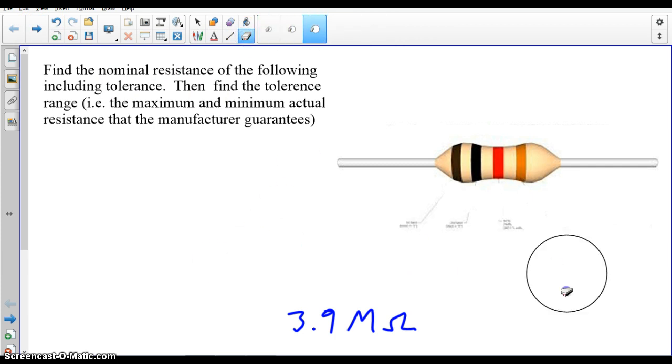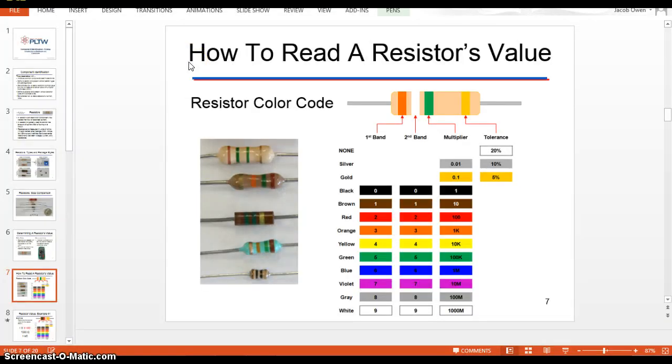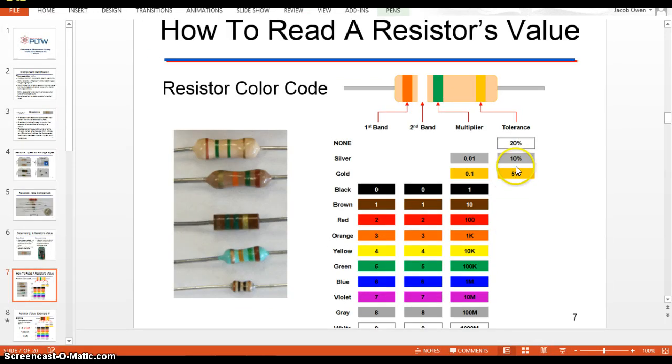The last stripe is the tolerance. What that means is that basically the manufacturer is guaranteeing that the actual resistance is either plus or minus the tolerance from what it says it is. So it's either five percent above or five percent below, or at least that's what it's saying if the stripe is gold. It's plus or minus ten percent if the stripe is silver, and then if there's none, which we don't even run into, that's super cheapo. It's plus or minus twenty percent. So the one I erased was plus or minus five percent.